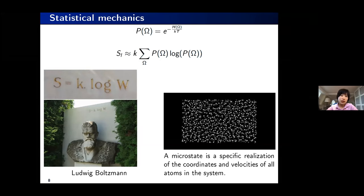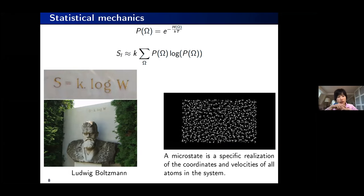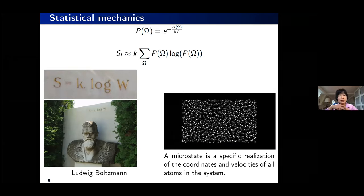The entropic term can be expressed as a weighted sum. We have a conflict: to compute energy accurately, we want more expensive, more accurate quantum mechanical methods. But to sample the microstates in a comprehensive manner, we want cheaper methods. During this talk, I'll explain how machine learning can resolve this conflict.